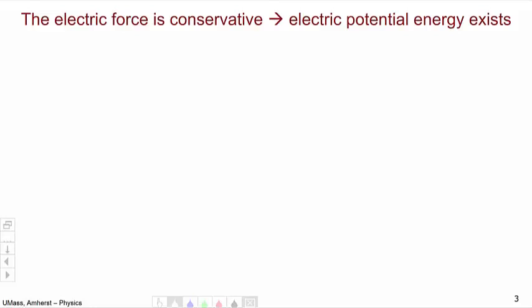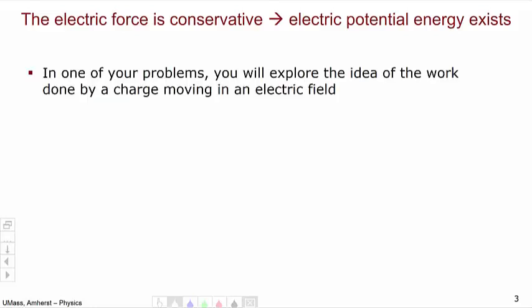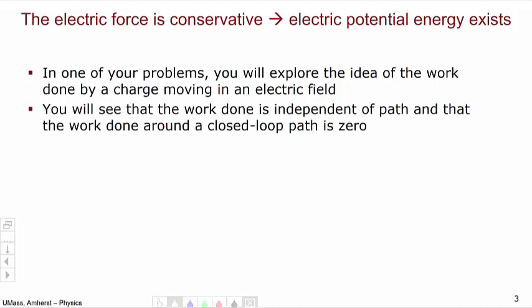We'll begin by stating that the electric force is a conservative force, which means that an electric potential energy must exist. In one of your problems you will explore the idea of work done by a charge moving in a uniform electric field. You will see that as the charge moves around, the work done is independent of the path that the charge takes, and that the work done around a closed loop path is in fact zero.